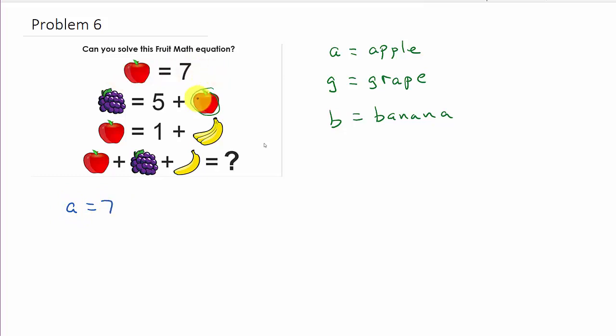Alright, so in this equation here, we've got G is equal to 5 plus A. Okay, I just replaced each one with the letter I let it represent.